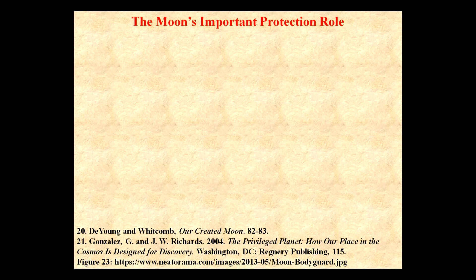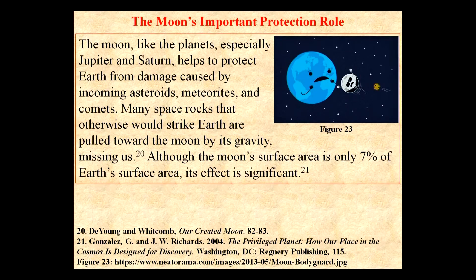The moon's important protection role: the moon, like the planets — especially Jupiter and Saturn — helps to protect Earth from damage caused by incoming asteroids, meteorites, and comets. Many space rocks that otherwise would strike Earth are pulled toward the moon by its gravity, missing us. The backside of the moon gets most of those. Although the moon's surface is only 7% of Earth's surface area, its effect is significant.